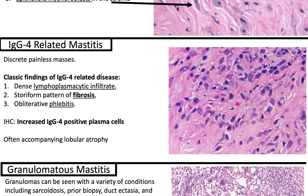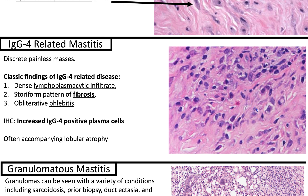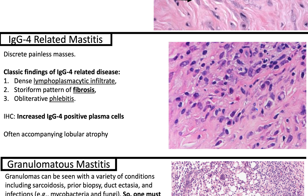This is a relatively newly emerging entity: IgG4-related disease, and one presentation is IgG4-related mastitis. It presents as a discrete painless mass. The classic findings are a dense lymphoplasmacytic infiltrate — you can see lymphocytes and plasma cells here — a storiform pattern of fibrosis, and obliterative phlebitis. On immunohistochemistry, to support this diagnosis, you'll have increased IgG4-positive plasma cells. It is often accompanied by lobular atrophy.